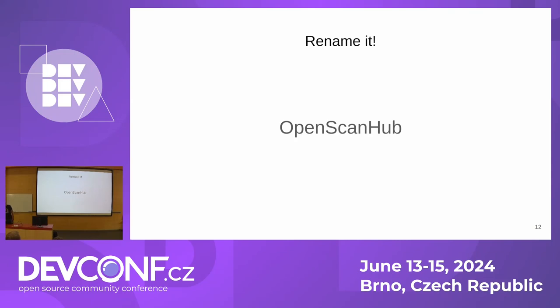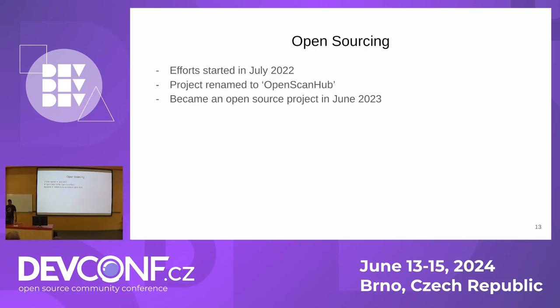We decided to call it OpenScanHub. For those of you who work at Red Hat and know the name CoScan, CoScan is actually OpenScanHub. We decided to open this code base in mid-2022, starting around June to July 2022. We spent quite some time thinking about the name, and in mid-2023 we became open source — meaning we moved to GitHub and started doing everything publicly.